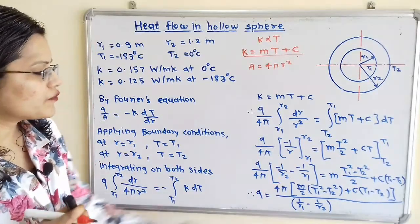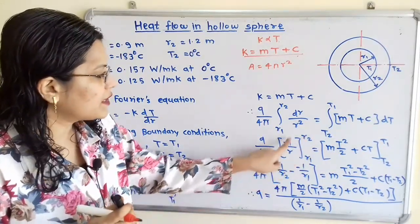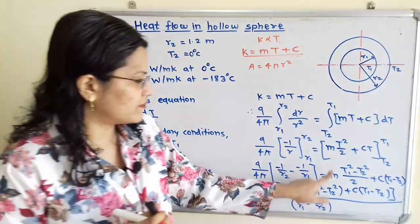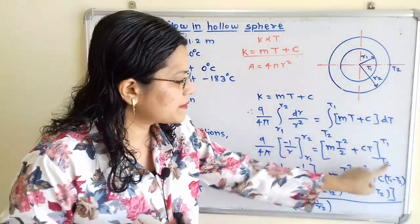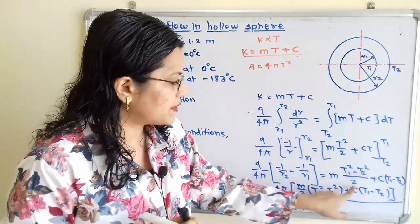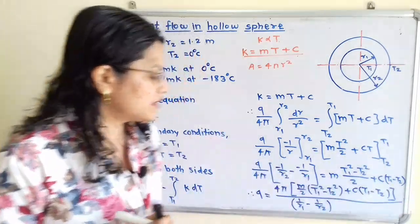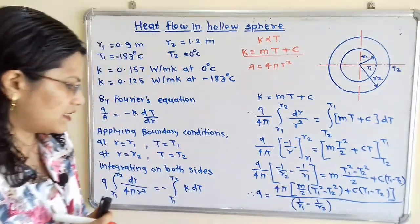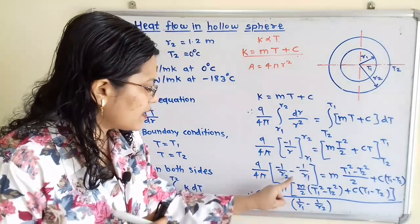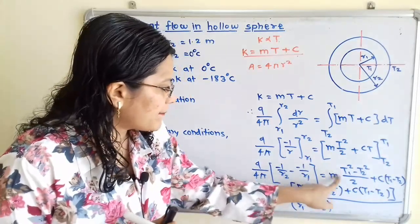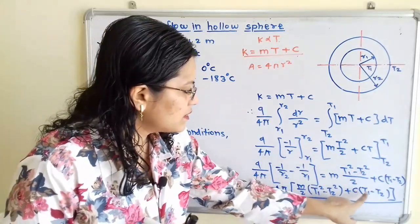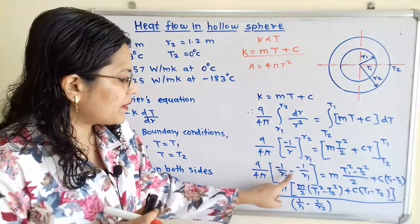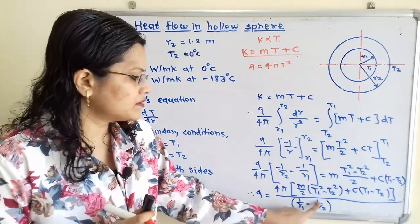Solving the brackets using upper limit minus lower limit: the left side gives minus 1/R2 minus (minus 1/R1). The right side gives M times (T1² minus T2²)/2 plus C times (T1 minus T2). Transferring terms to find Q: Q equals 4π times [M/2 · (T1² − T2²) + C(T1 − T2)] divided by (1/R1 minus 1/R2), where the double negative gives plus 1/R1 minus 1/R2.